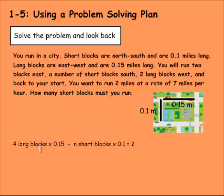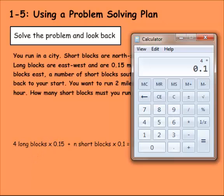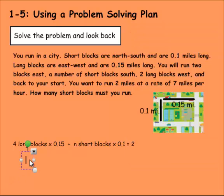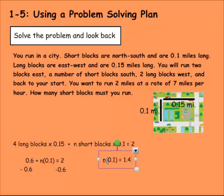So if we're going to do order of operations, we could do the four long blocks times 0.15. Four times 0.15 would give us 0.6. So 0.6 plus n short blocks times 0.1 needs to equal two. If we're going to solve this like an equation, we could subtract 0.6 from both sides. So two minus 0.6 is 1.4. So now we have n times 0.1 equals 1.4.